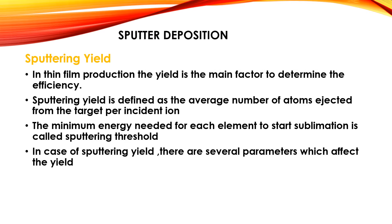In thin film production, the sputtering yield is the main factor which determines efficiency. The sputtering yield is defined as the average number of atoms ejected from the target per incident ion. The minimum energy needed for each element to start sputtering is called the sputtering threshold. There are several parameters which may affect the yield, which will be explained.